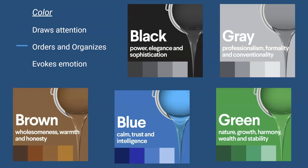I did find a website that gave us a few meanings of what the colors are. Black being power, elegance; gray, professionalism, formality; brown, wholesomeness, warmth; blue, calm, intelligence; green, nature, wealth, stability.